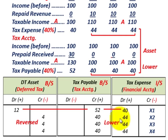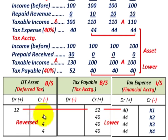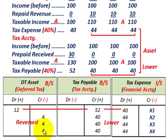For each of the next three years: tax payable credit is $40,000 versus tax expense debit of $44,000. The debit is greater than the credit, so we need a credit of $4,000 to the deferred tax asset each year, reducing it. We started with a $12,000 debit and reduce it by $4,000 for each of the next three years, arriving at a zero balance.